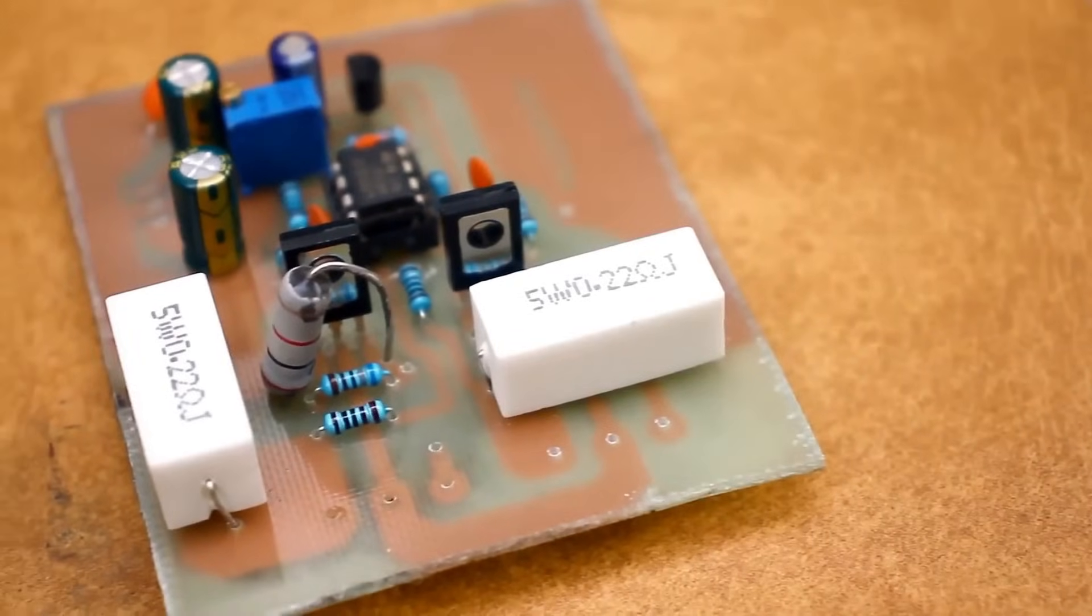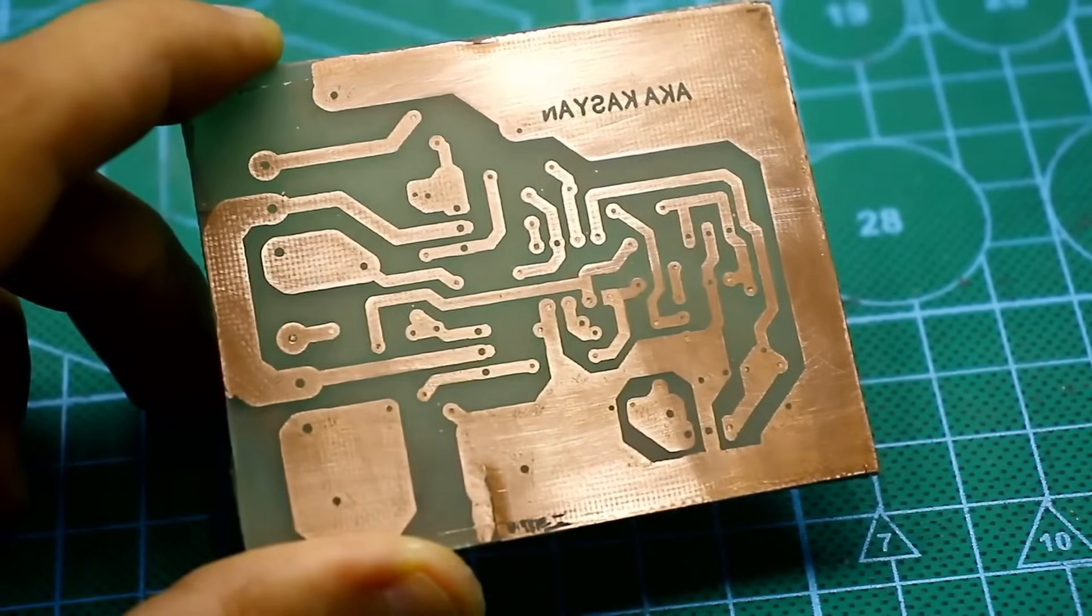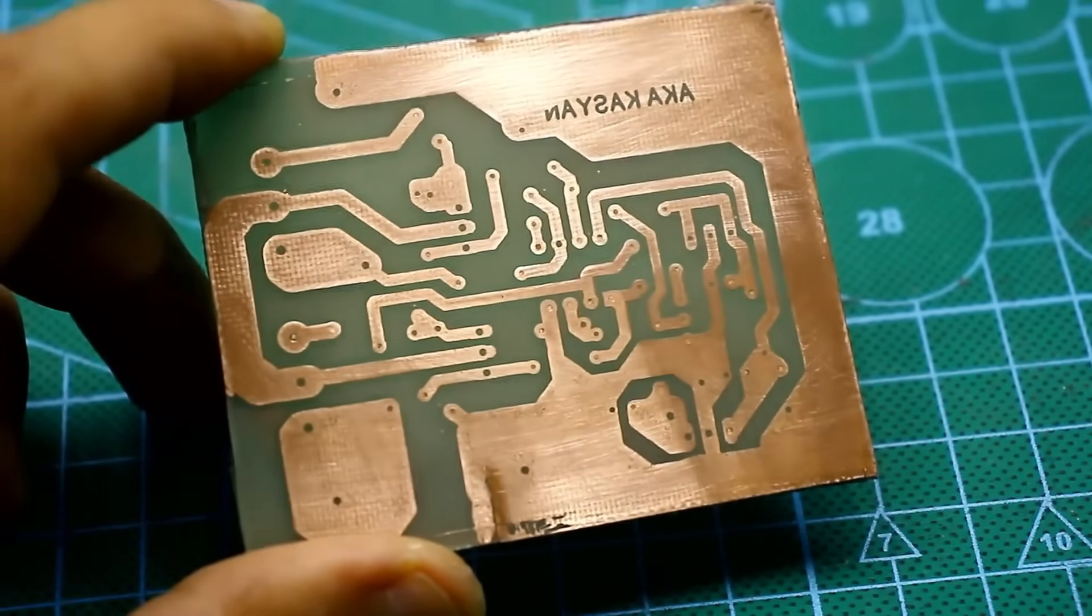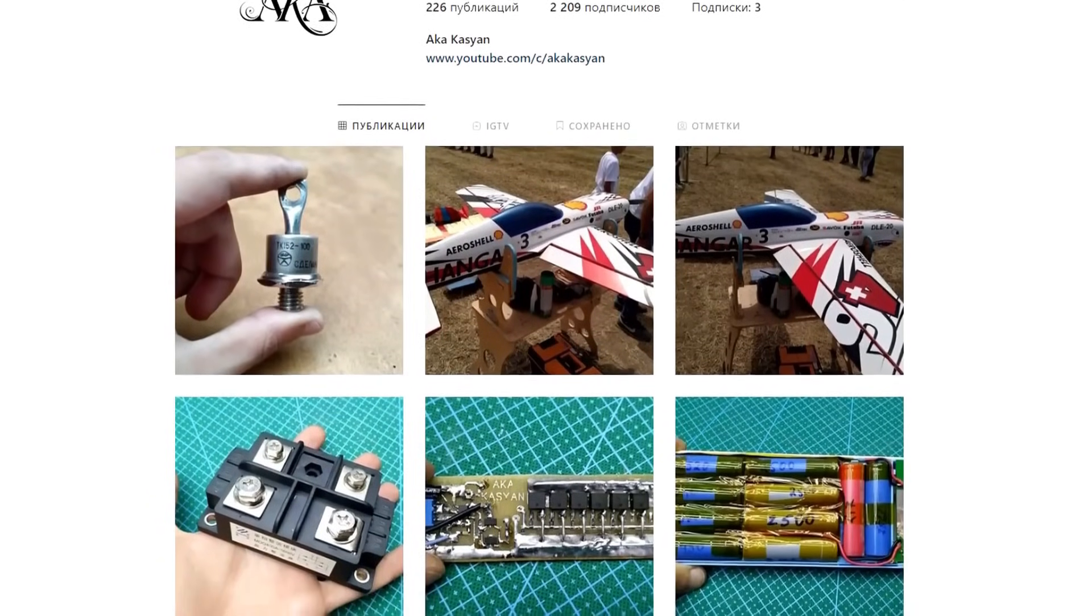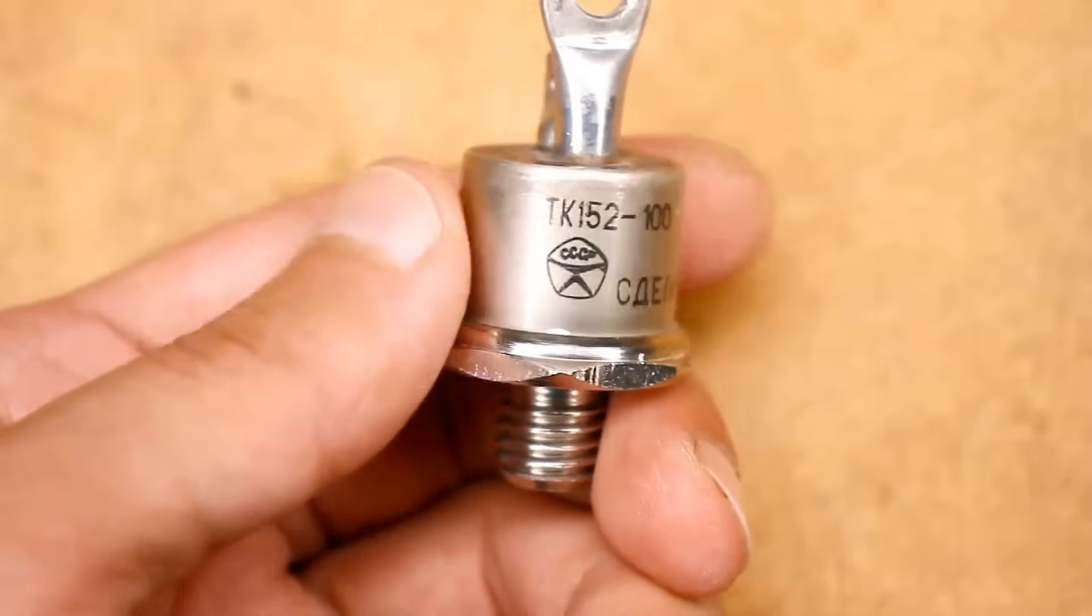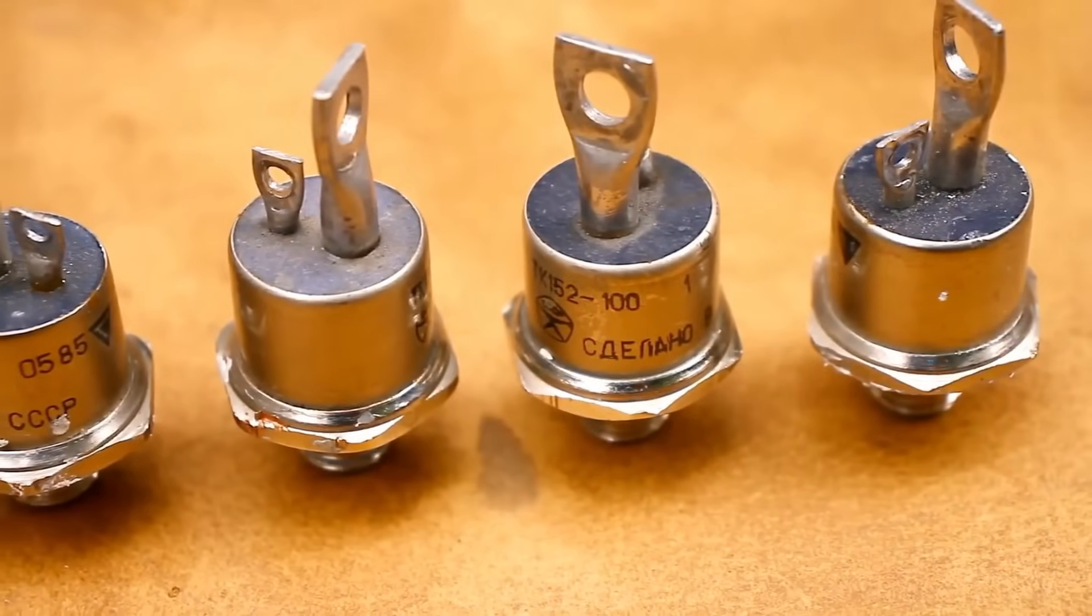And before saying goodbye, I'll remind you that all the necessary links, including the link to download the archive with the printed circuit board, can be found in the description. Don't forget to subscribe to my Instagram, where I upload photos of new projects. That's all from me. As always, this was Kazyanaka with you. And until we meet again, bye.